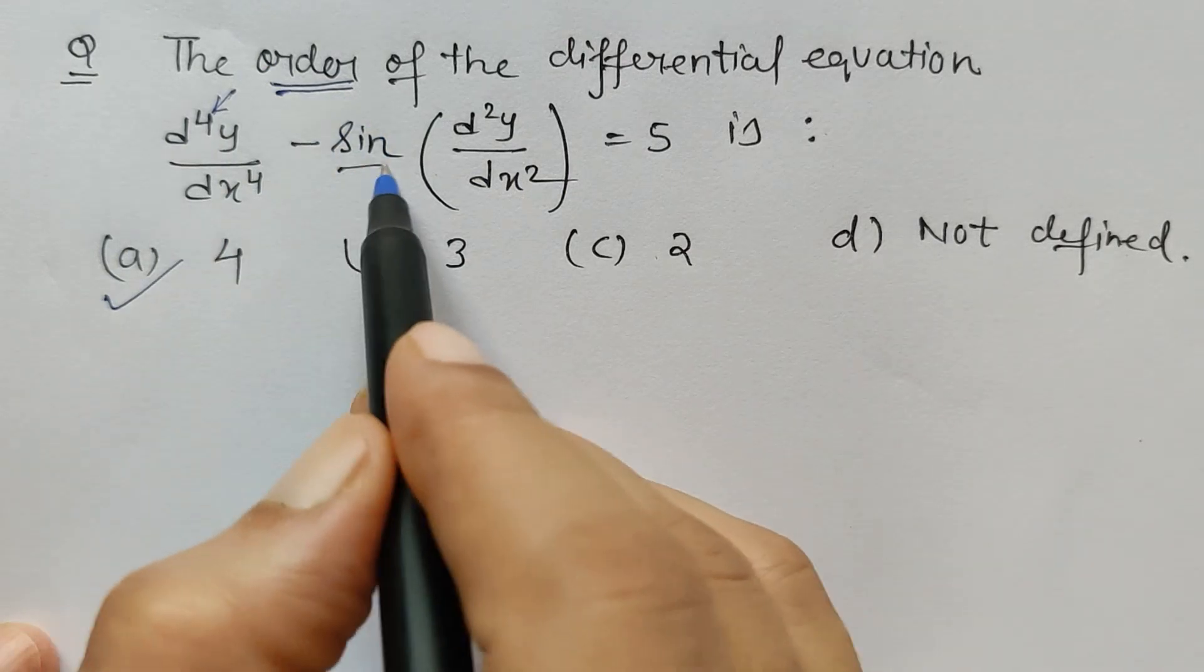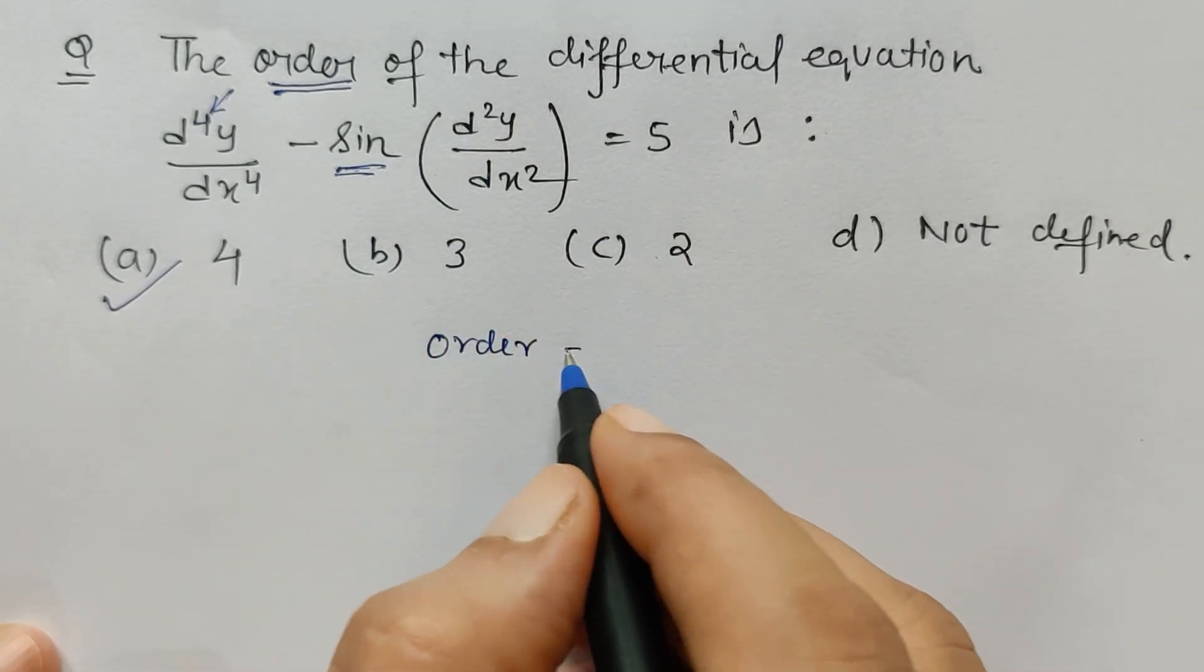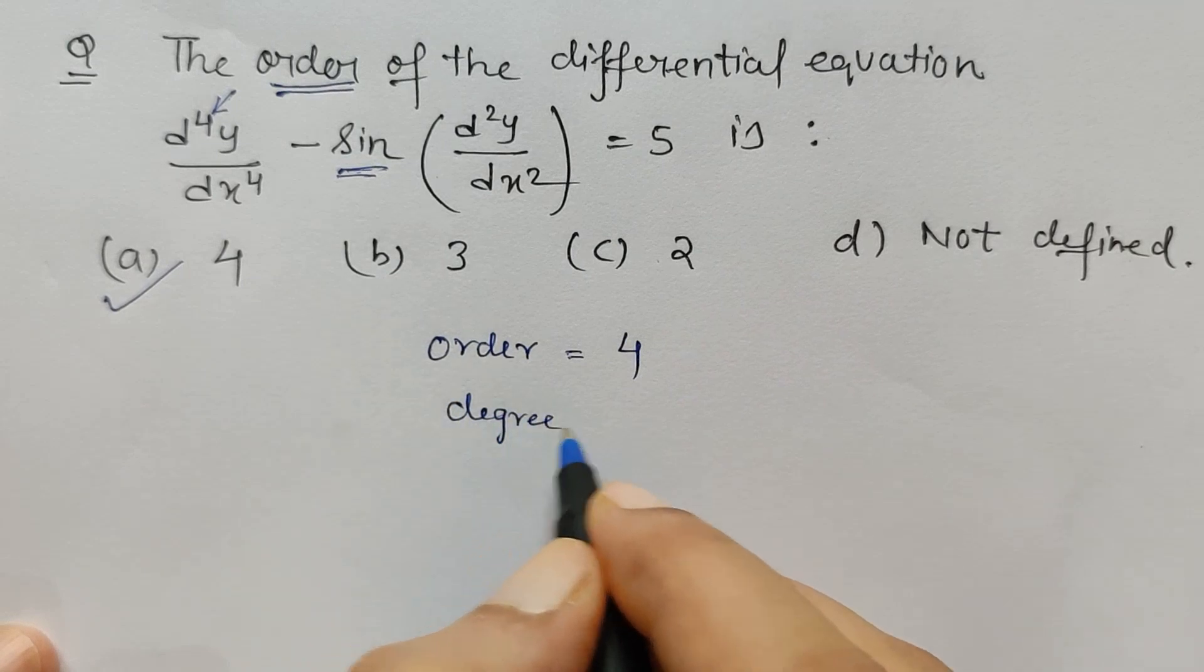logarithmic function, or exponential function, then I would have also said that its degree is 1. But since sine function is present, degree is not defined but order is defined. Order is 4 and degree is not defined.